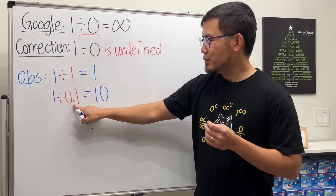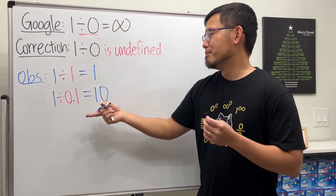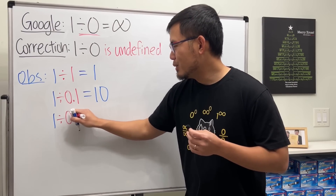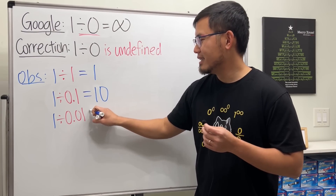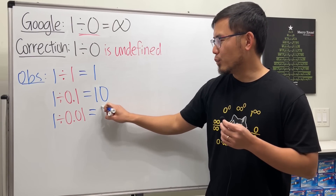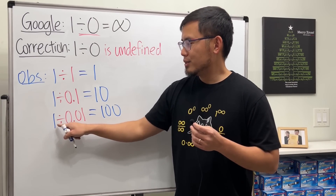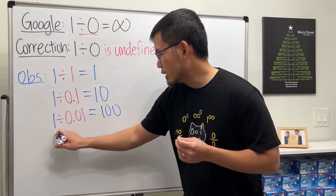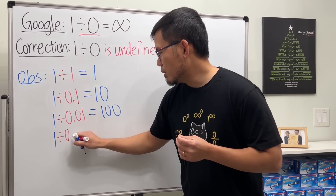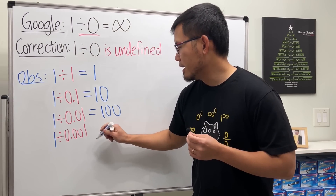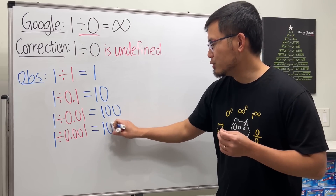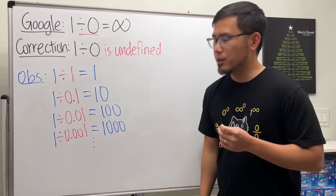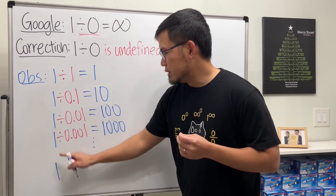We're making some progress — can we make the denominator even smaller? How about one divided by 0.01? You get 100 — you basically just put two zeros after the one. Let's do another one: one divided by 0.001, and you get 1000, with three zeros after the one.